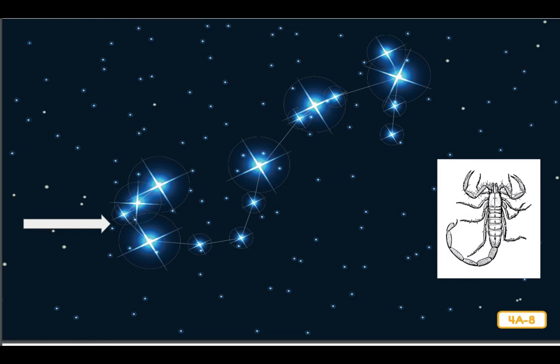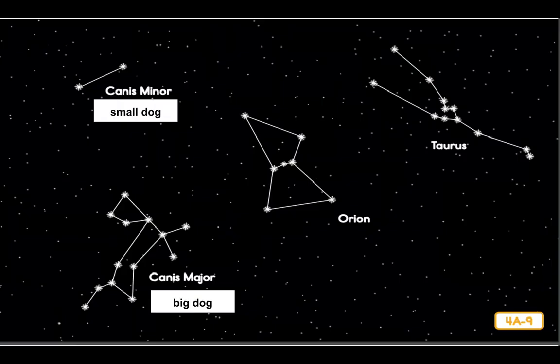According to one myth, Orion bragged he was such a good hunter that he could kill all animals on Earth. The gods decided to punish him by creating Scorpio, a giant scorpion that Orion could not defeat. My arrow is pointing to what is the tail of this constellation. I've also included a picture of a scorpion for you.